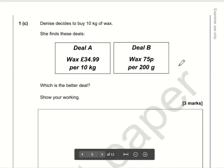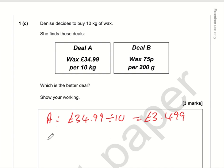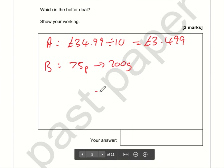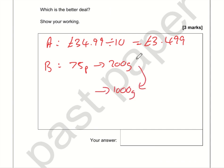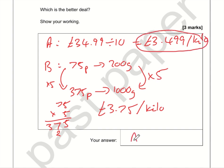For part C we're comparing two deals, so I would work out the price per kilo. Deal A is £34.99 for 10 kilos, so per kilo it's 34.99 divided by 10 — move the decimal point one position — that's £3.499, or roughly £3.50. For deal B it's 75p for 200 grams. 1 kilo is 1000 grams, which is 5 times bigger than 200g, so it's 75p times 5. 75 times 5 is 375p, which is £3.75 per kilo. So deal A at £3.50 per kilo is better value.